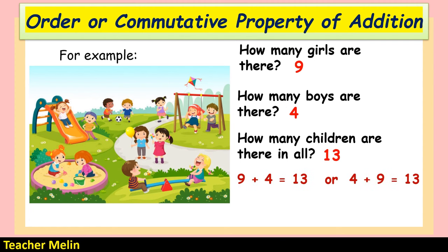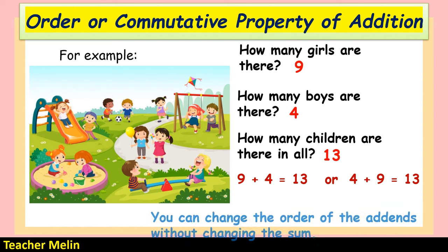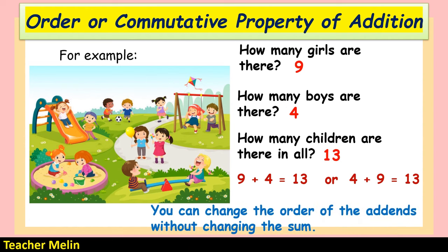The number sentence could be 9 plus 4 equals 13, or the addends can be exchanged: 4 plus 9 equals 13. You can change the order of the addends without changing the sum. Both give the same answer of 13, so this is the order or commutative property of addition.